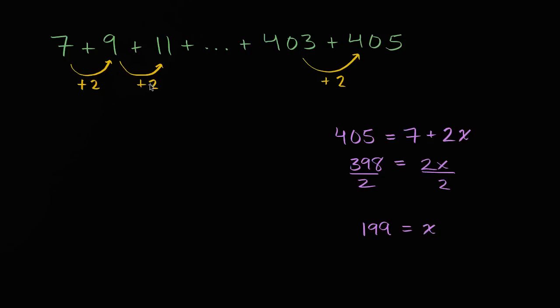So we're essentially adding 2, 199 times. So this is the first time we're adding 2, this is adding 2 times 1, adding 2 times 2, and here we're adding 2 times 199 to our original 7.